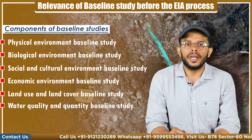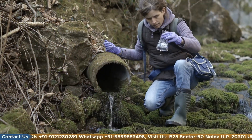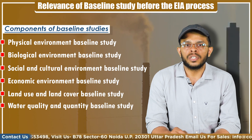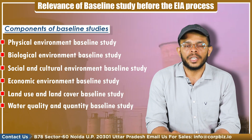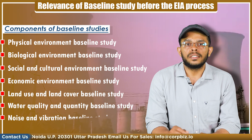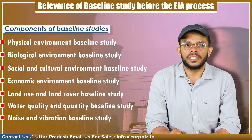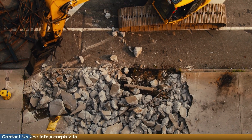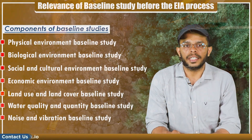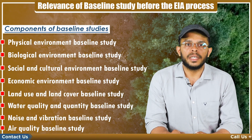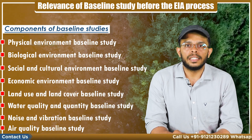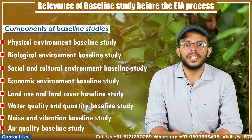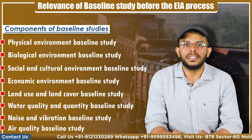Next is water quality and quantity baseline study. This involves collecting and analyzing data on the quality and quantity of surface water and groundwater in the project area. Next is noise and vibration baseline studies, which involves collecting and analyzing data on the existing noise and vibration levels of the project area. The last is air quality baseline study, which involves collecting and analyzing data on the existing air quality of the project area, including concentration of pollutants and their sources.